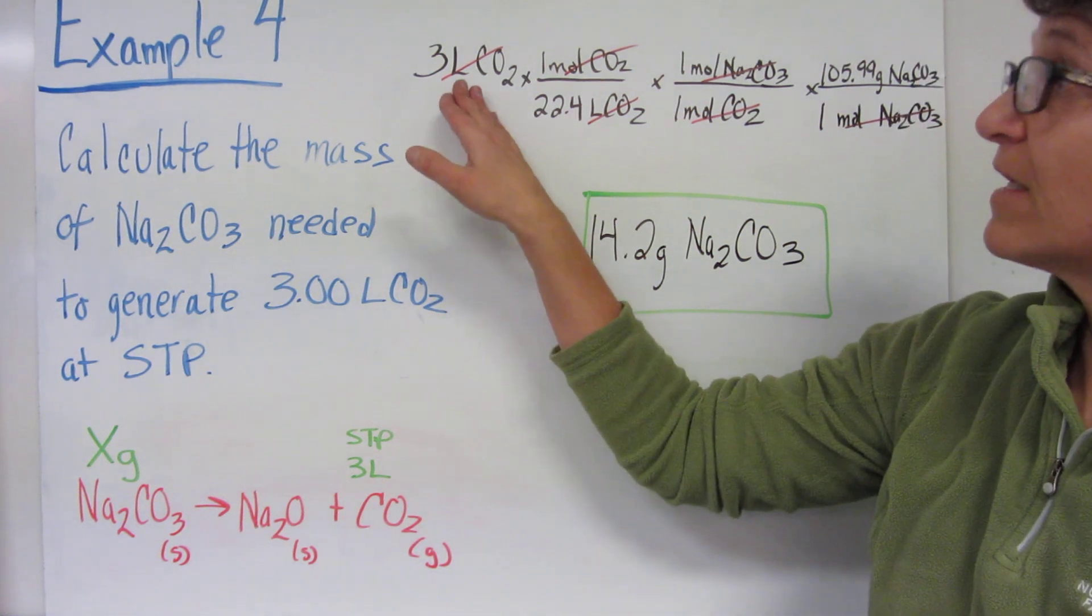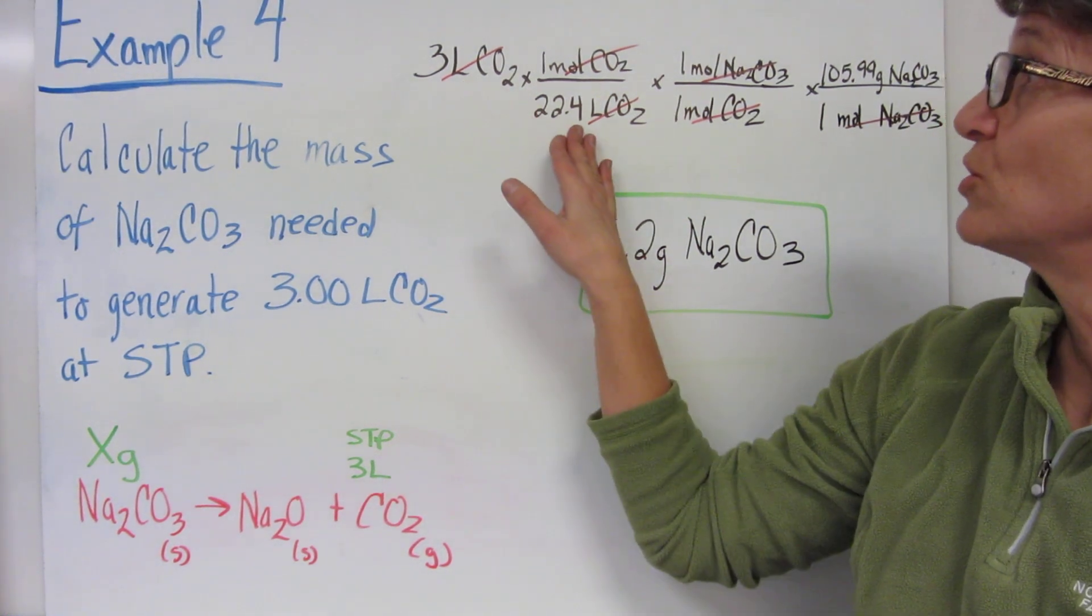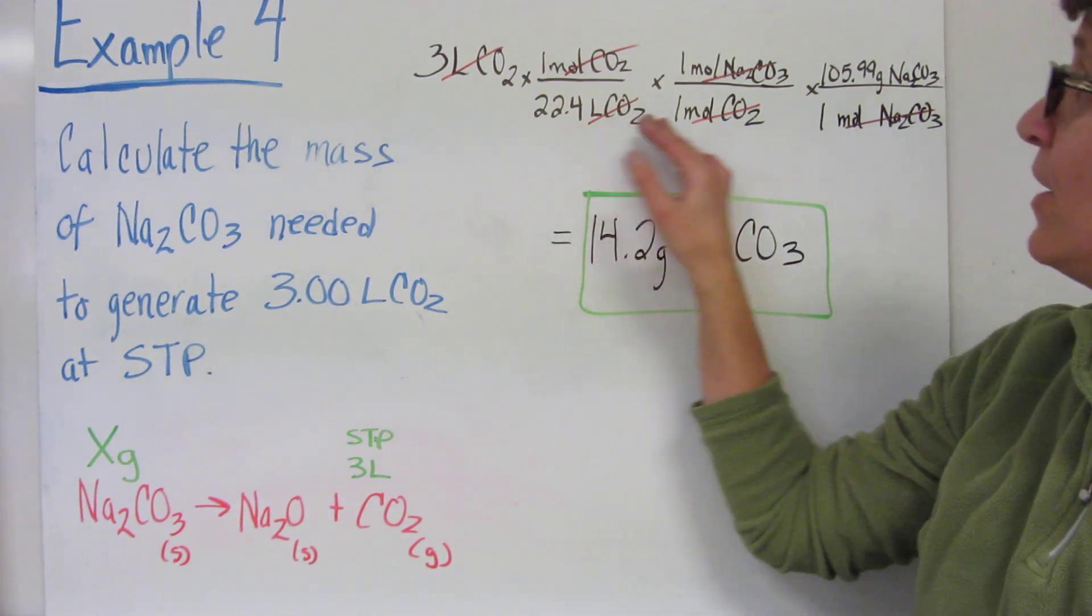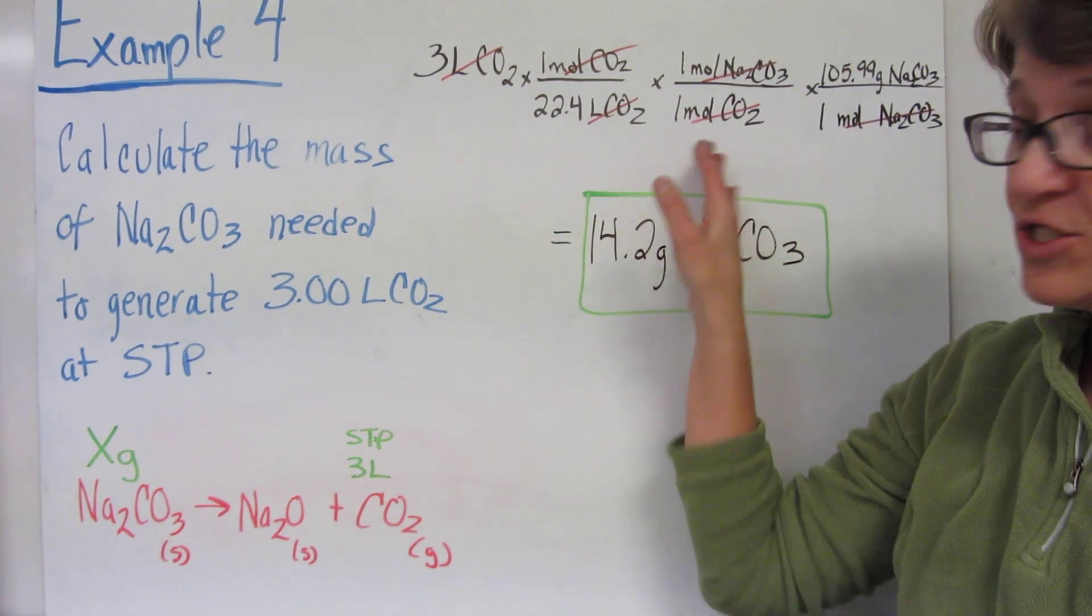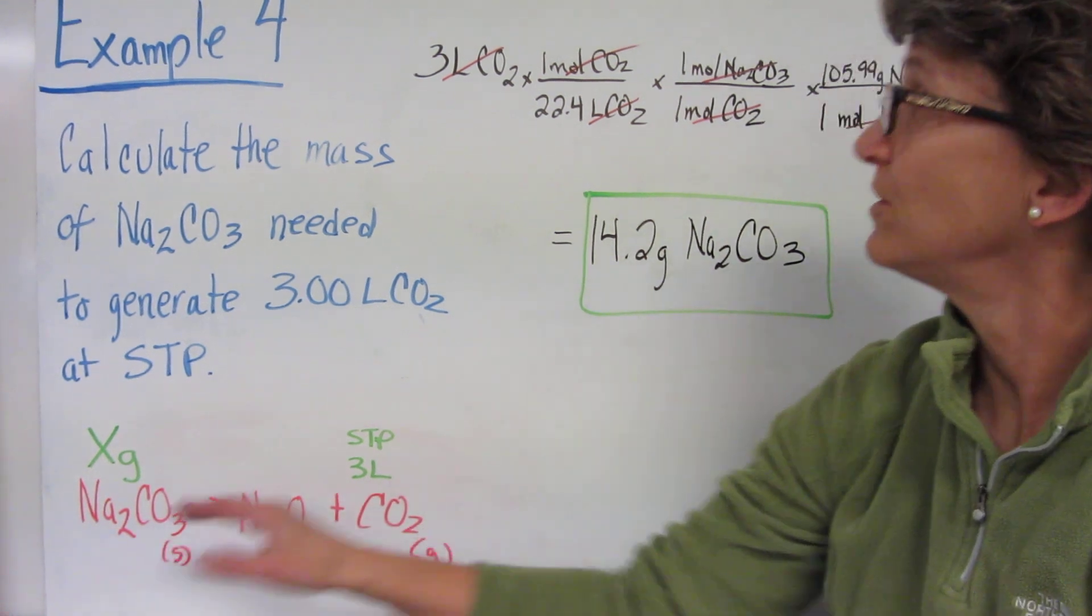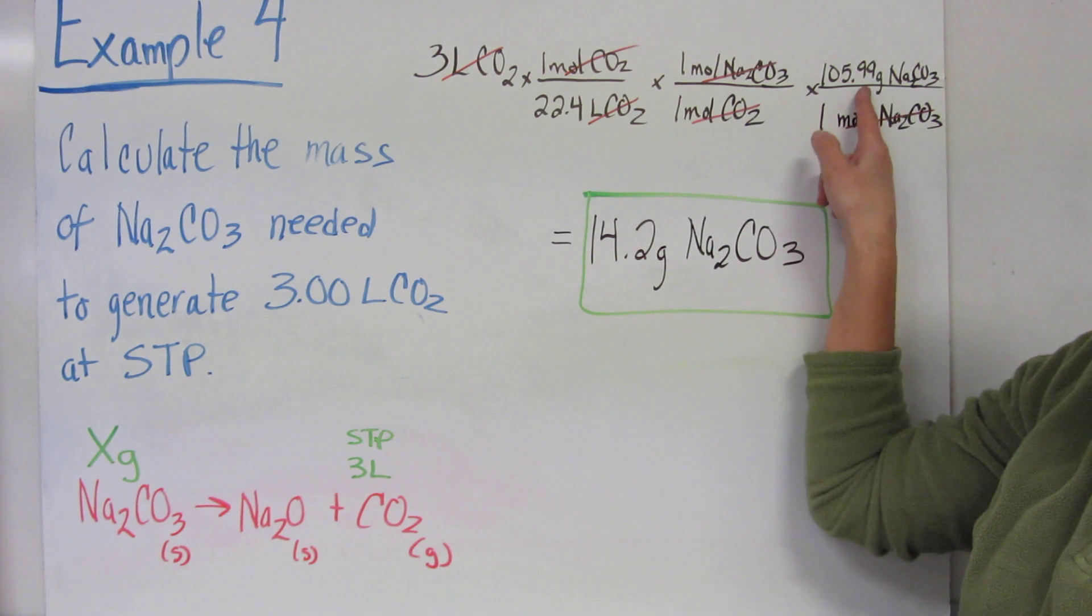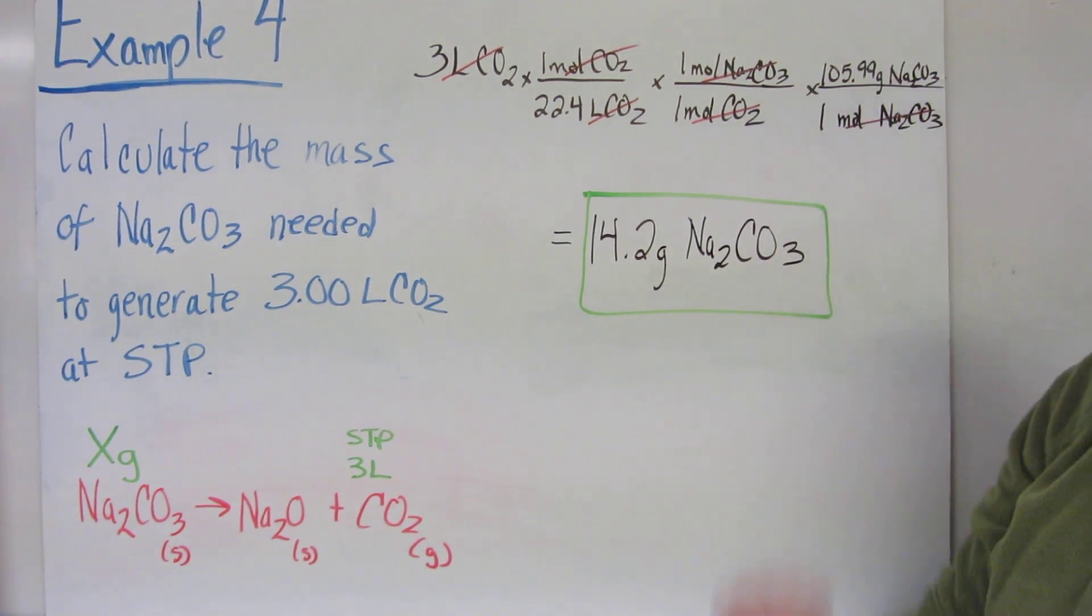So this time, convert your liters of CO2 to moles of CO2 using the molar volume ratio. Use your balanced equation, mole to mole ratio, to convert to moles of sodium carbonate, and now you can go to grams of sodium carbonate using its molar mass.